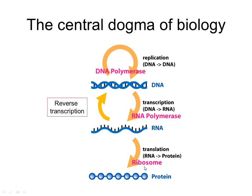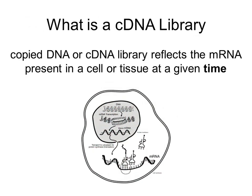cDNA sits as a reverse step in this flow of information. What we're going to do is take messenger RNA and, using reverse transcription, convert it back to DNA. There are a number of good reasons to do that. It's particularly important as a first stage in cloning, and it is a way of generating libraries of information that we can use in later steps to identify and characterize proteins of interest. The cDNA library consists of copied DNA, or cDNA.